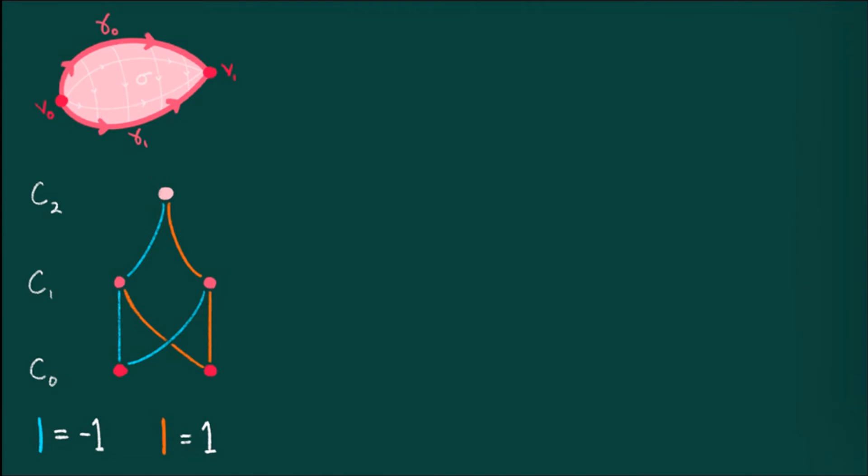Of course, we cannot yet declare ourselves victorious in constructing a chain complex. We need to check that the master equation holds. In other words, we have to check that the boundary operator squares to zero. Note that as everything below zero and above two is zero, we only need to check that the boundary of the boundary of sigma is zero. One usually says this is due to degree reasons, which is a mathematician's version of dimensional analysis in science. Like dimensional analysis in science, degree arguments can be extremely powerful.